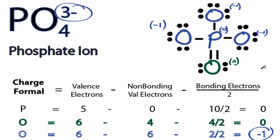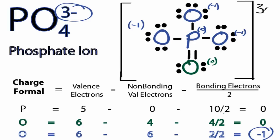So this is the best structure for the Phosphate ion, the Lewis structure for PO4 3-. We do need to put brackets around it and a 3- out here, so that everyone knows that it is, indeed, the Phosphate ion.